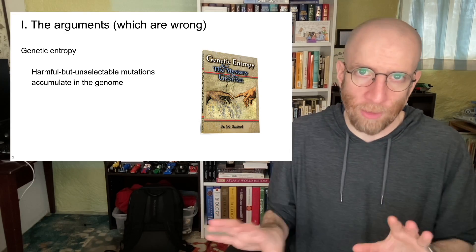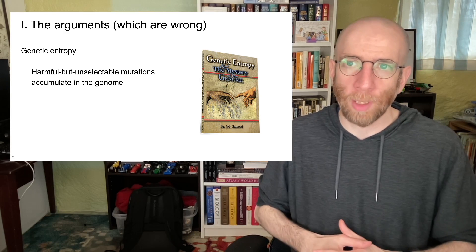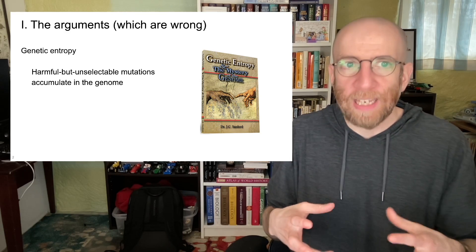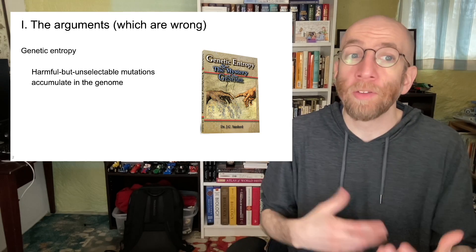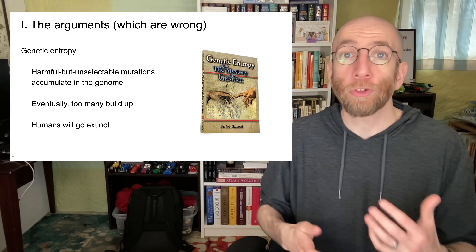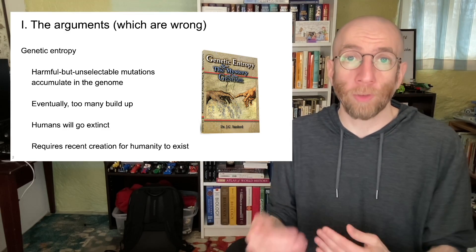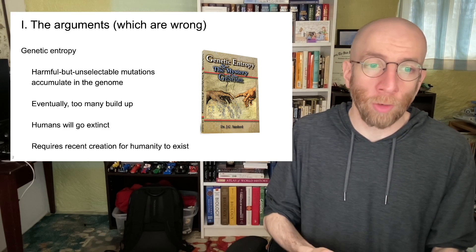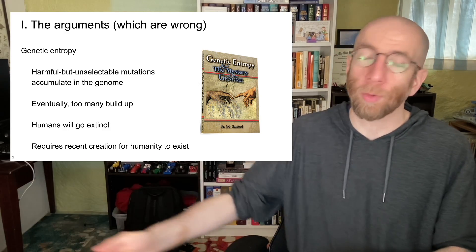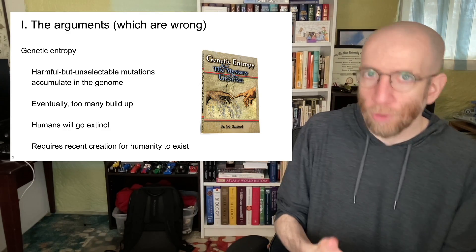Genetic entropy comes from a retired plant geneticist, Dr. John Sanford. In 2005 he released the book Genetic Entropy and the Mystery of the Genome. The argument he makes is that there is a barrage of harmful but unselectable mutations that build up in the human genome generation after generation. Eventually too many build up, the cost in fitness becomes too large, and this will cause humanity to go extinct. This supports creationism because if genetic entropy is true, it requires a recent creation — under evolutionary time frames of 200,000 to 300,000 years, humanity would already be extinct. Therefore, genetic entropy shows recent creation.